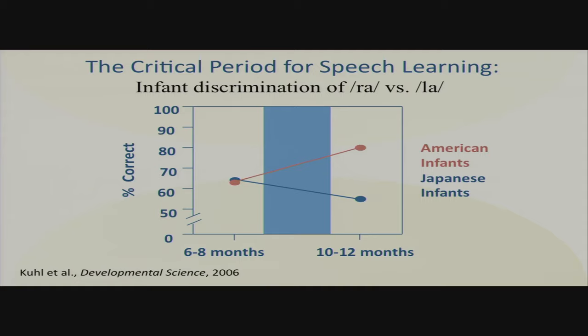All babies are doing what they should do to acquire words in their language. It's actually good that Japanese babies start failing on R-L, because if they were paying attention to differences that don't matter, perception would be less efficient. We've got them by their first birthdays, when they acquire first words, already sorting out the sounds that are important to their language.